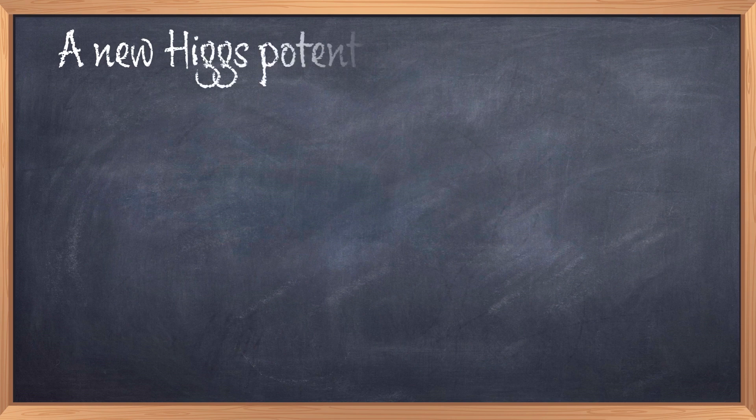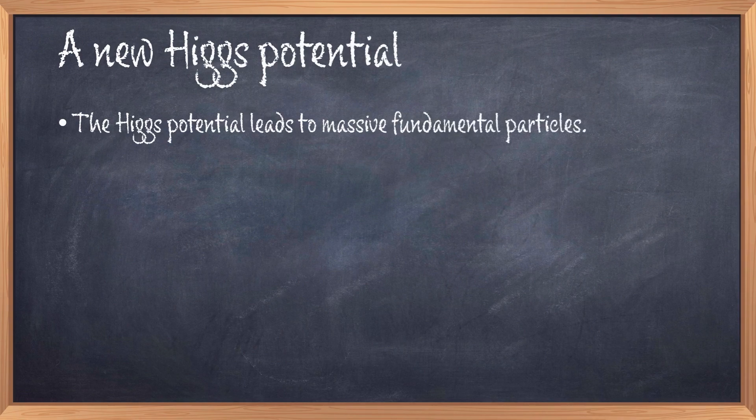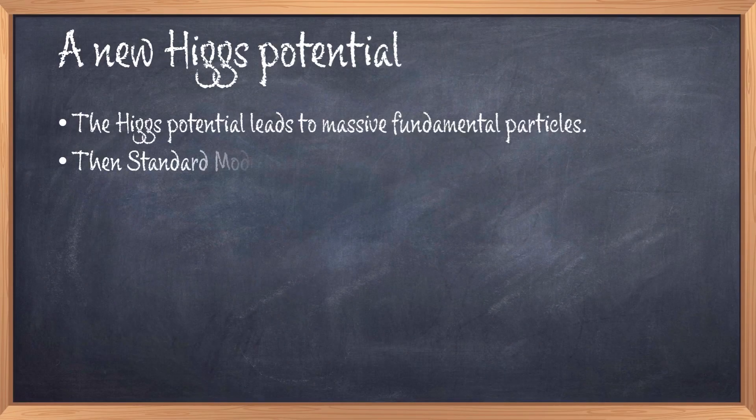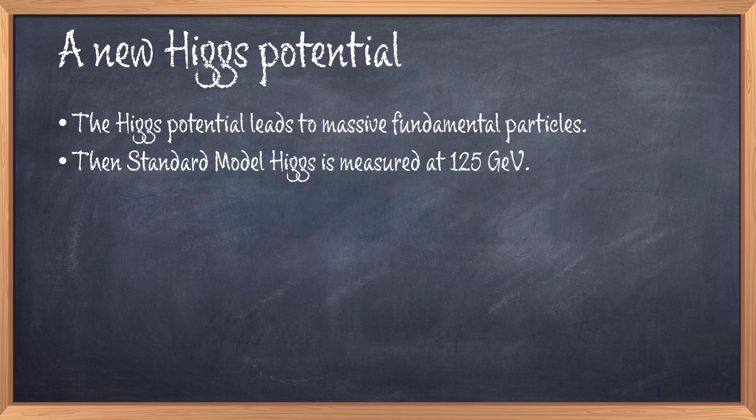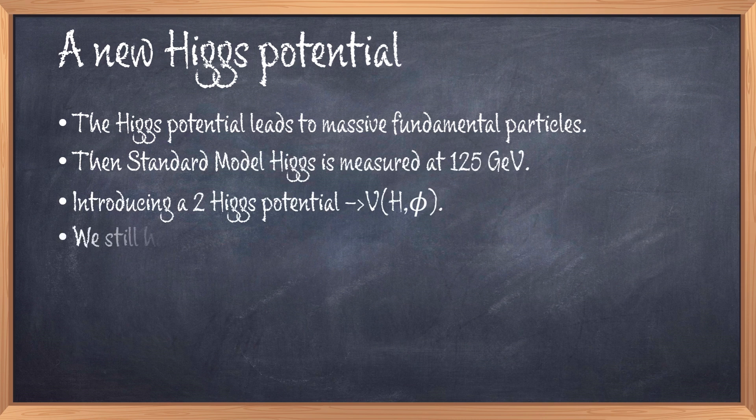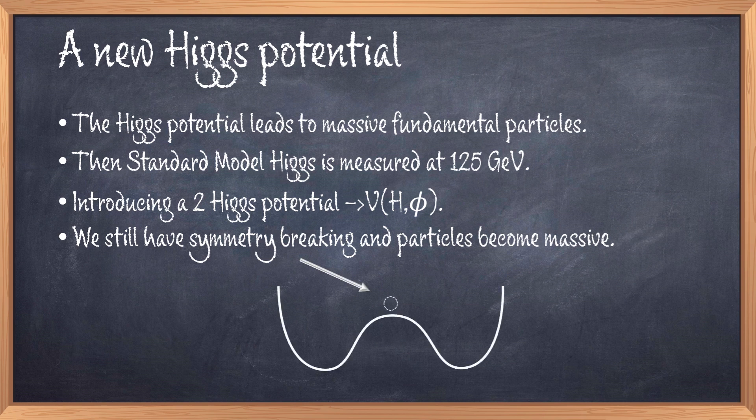The Higgs potential of the standard model is essential as it leads to the fundamental masses of the particles. The standard model Higgs was finally discovered in 2012 and has the mass around 125 GeV. This was the last piece of the standard model, but the standard model Higgs turns out to be a bit odd as it leaves some questions unanswered. To improve on that, a new Higgs potential is considered with an additional Higgs particle phi. The potential at the end of the day does the same thing. It generates symmetry breaking and thus causes fundamental masses. Thus we get massive particles like the massive quarks and electrons. But there are some details that make this two Higgs potential a bit more favorable, even though it's a bit more complicated.